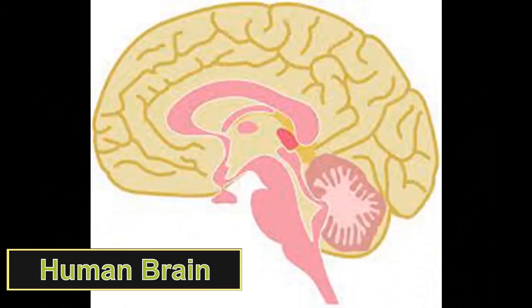The forebrain includes the cerebral hemisphere, which contains the thalamus and the hypothalamus. The thalamus is the main relay center between the medulla and the cerebrum. The hypothalamus is very important as it controls pleasure, pain, hunger, thirst, blood pressure, body temperature, and other visceral functions. When we feel hungry, feel pain, or feel happy, all of these are controlled by the hypothalamus, which secretes hormones causing these responses.